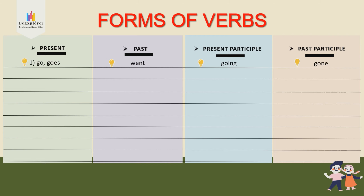Now you can take out your grammar exercise book and write 'Forms of Verbs' as a title. Divide your book into four columns like what you see here. Then write number one: go, goes — the past tense, then the present participle form and the past participle.